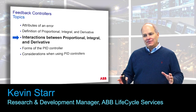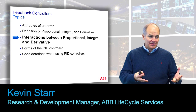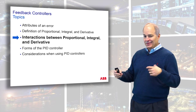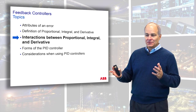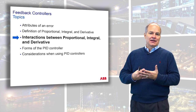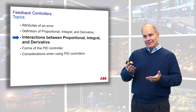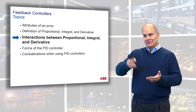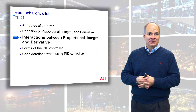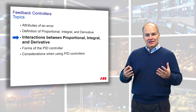We've gone through the definitions - what are the attributes of an error, what is proportional, integral, derivative, and we covered on-off control. Now we're going to talk about the interactions. P by itself results in an offset, I by itself results in oscillations, D by itself is never used.